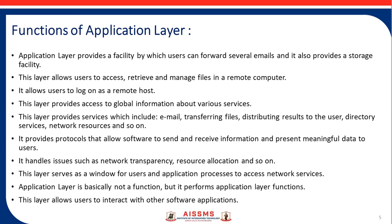The application layer provides protocols that allow software to send and receive information and present meaningful data to users. It also handles issues such as network transparency and resource allocation. The application layer provides access to global information about various services. It provides services which include email, transferring files, distributing results to the user, directory services, network resources, and so on. The application layer also allows users to interact with other software applications.